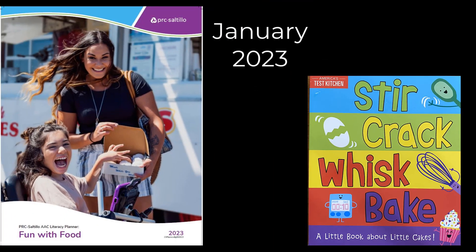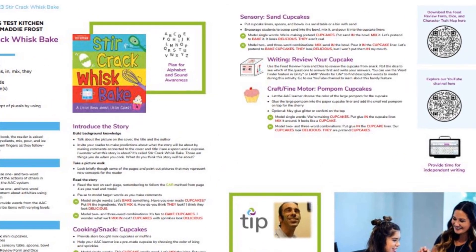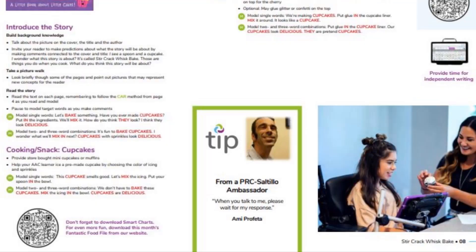Let's read a story from the PRC Saltillo AAC Literacy Planner, Fun with Food. This month, we're going to be reading the book Stir, Crack, Whisk, Bake, and we'll be talking about making cupcakes. In the Literacy Planner, you'll find a lesson plan to help you teach and model target words each month. Don't forget to check out the tip from a PRC Saltillo ambassador who uses one of our speech-generating devices or apps.